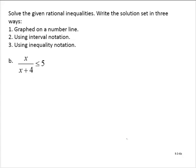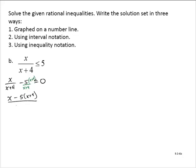Exercise B: we have x over x plus 4 is less than or equal to 5. Since this is not compared to 0, we subtract 5 to get x over x plus 4 minus 5 is less than or equal to 0. Writing 5 with the common denominator x plus 4, we get x minus 5 times x plus 4 over x plus 4, which simplifies to x minus 5x minus 20 over x plus 4, giving us negative 4x minus 20 over x plus 4 is less than or equal to 0.